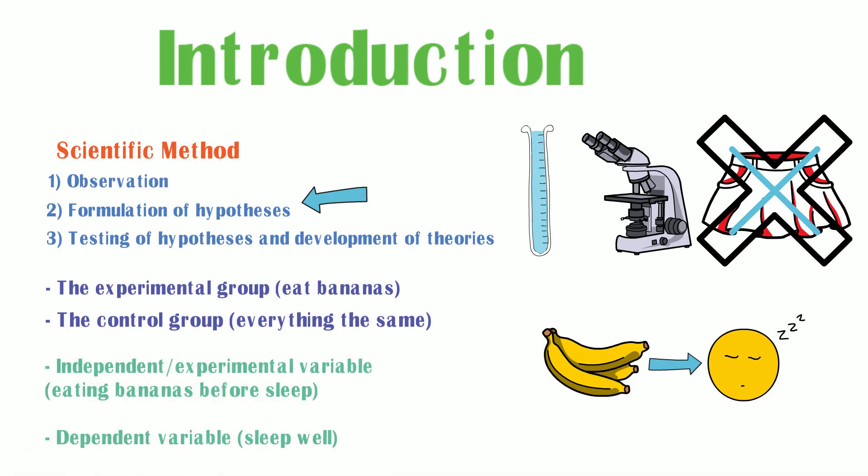The independent or experimental variable, which is the factor manipulated by the researcher in order to determine the relationship of the factor with the observed phenomenon. In this case, it is eating bananas before sleep.